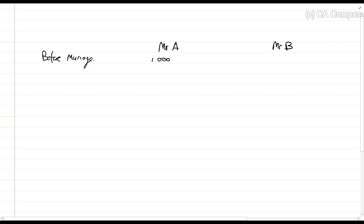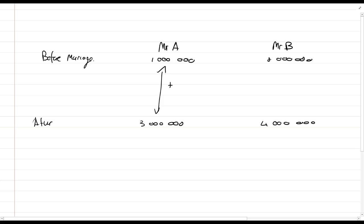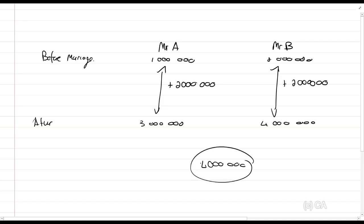Before marriage, Mr. A had assets worth one million rands and Mr. B had assets worth two million rands. After marriage, Mr. A has three million rands and Mr. B has four million rands. During the marriage, Mr. A's assets increased by two million and Mr. B's also increased by two million — together they made four million, so each is entitled to two million of that. In this case there would be no accrual claim since the increases are equal.